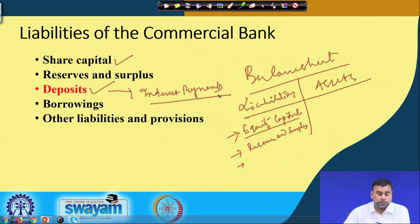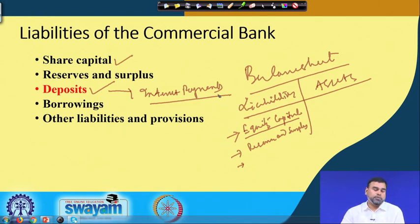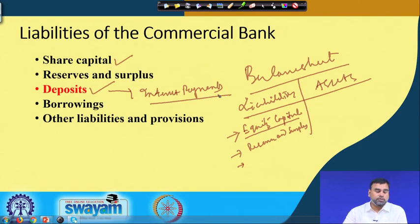Any type of long-term and short-term borrowings that the bank takes — whether from RBI or from other banks existing in the financial system — also constitute liabilities. Against those borrowings they have to pay interest, and at the end they also have to repay the principal amount. Because of these fixed obligations, borrowings are considered one of the major liabilities for banks as well as other organizations.